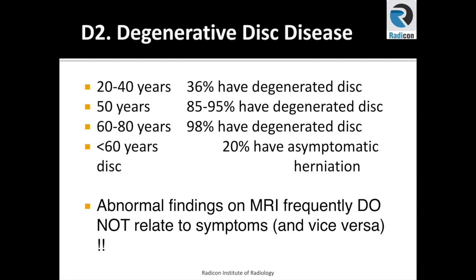It is worth remembering that abnormal findings on MRI frequently do not relate to the symptoms, and vice versa. This is because radiculopathy can arise not only from mechanical compression of the disc, but also from the inflammatory reaction from a torn or herniated disc, even when it may not be directly touching the nerve root.